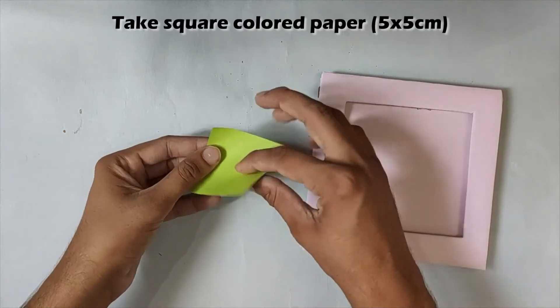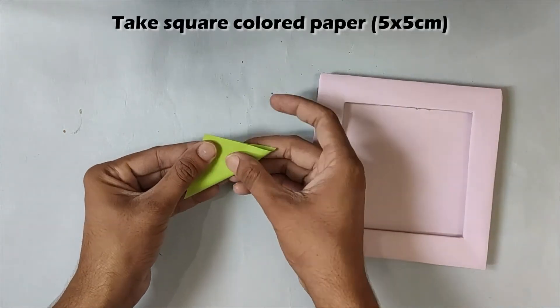Take small square colored sheets and fold them as shown in video to make flowers.